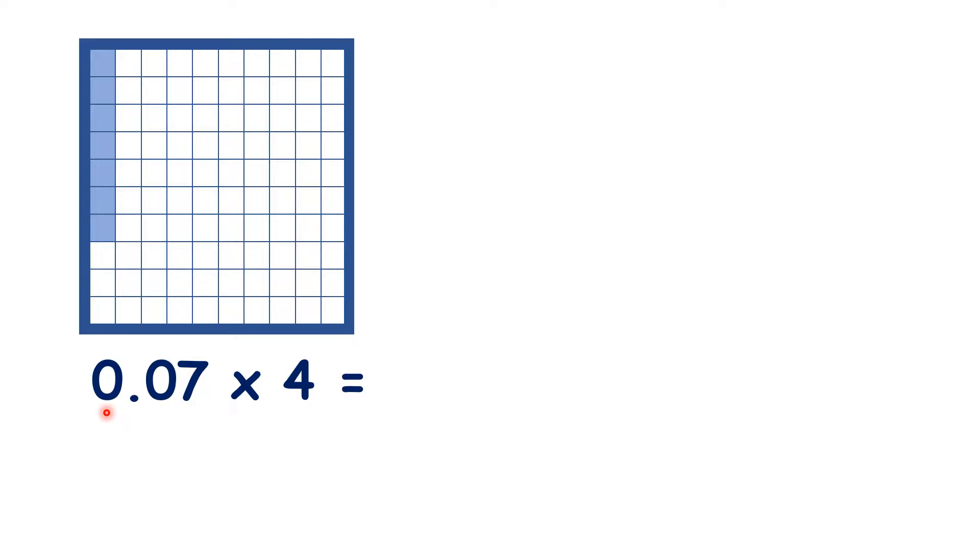So what is 0.07 times 4? Well, what we're really doing here is adding 0.07 four times.